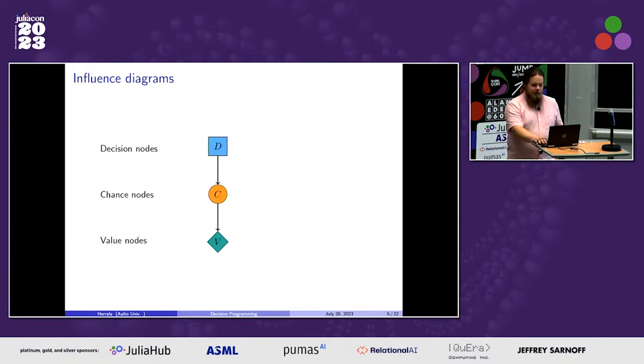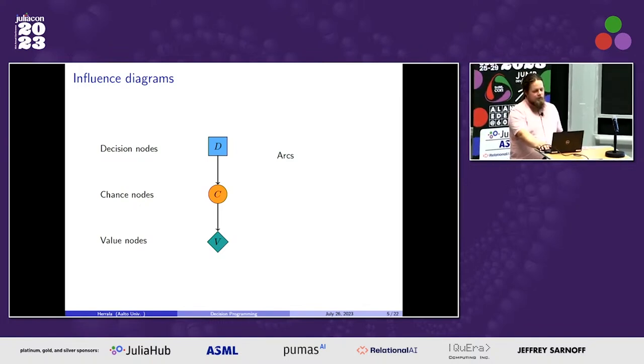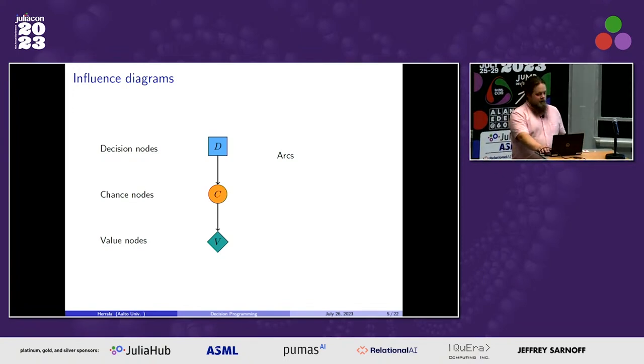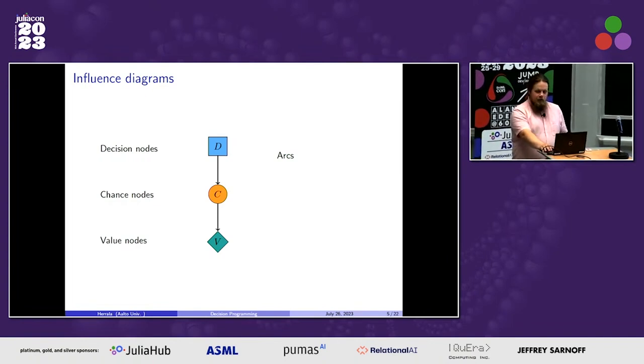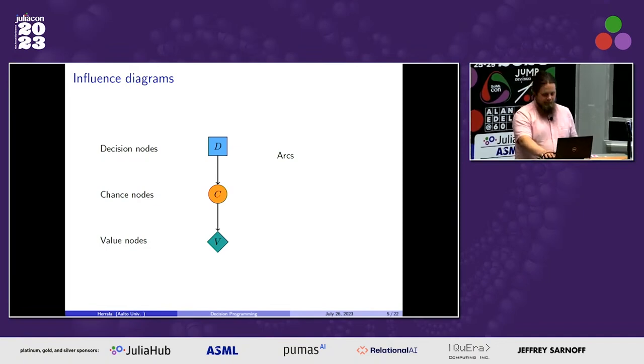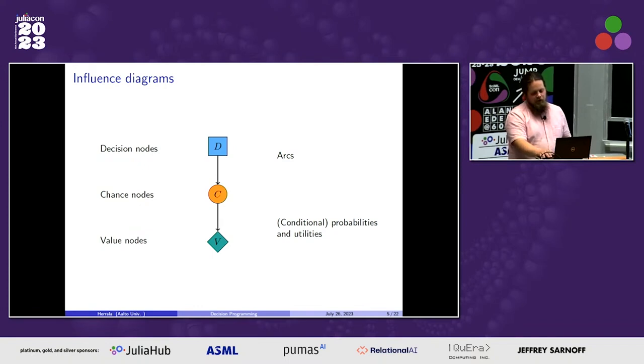The square nodes we call decision nodes, the circles we call chance nodes, and the diamonds we call value nodes. Decision nodes represent decisions, chance nodes represent some uncertain event, and value nodes represent the consequences associated with these decisions and uncertain events. Then we have these arrows, also known as arcs, connecting these nodes. For example, in this very simple case we have an arc going from d to c, which in the case of a chance node means that the probability distribution of c is conditional on the decision made in node d.